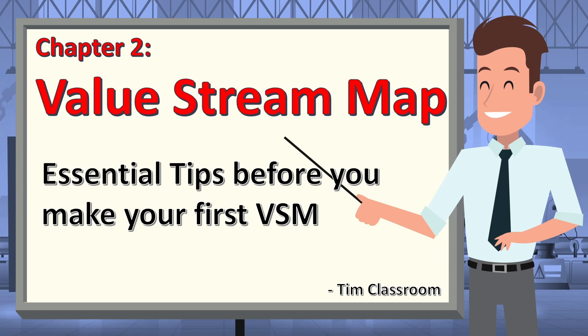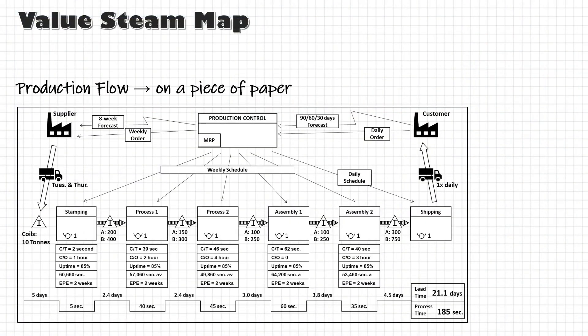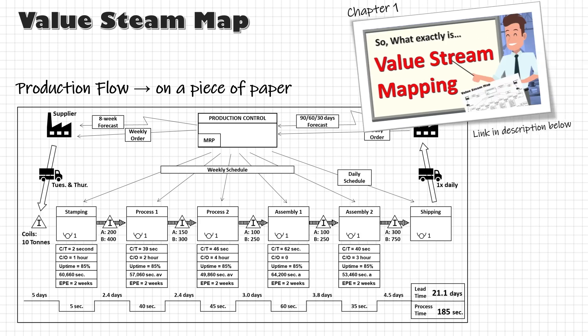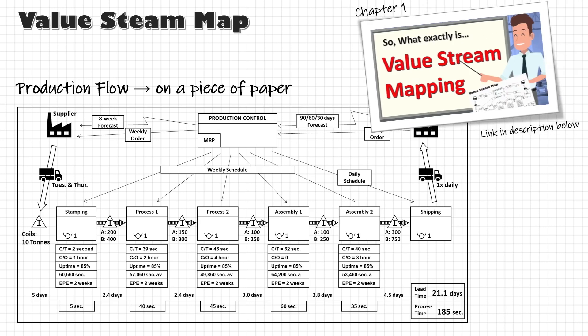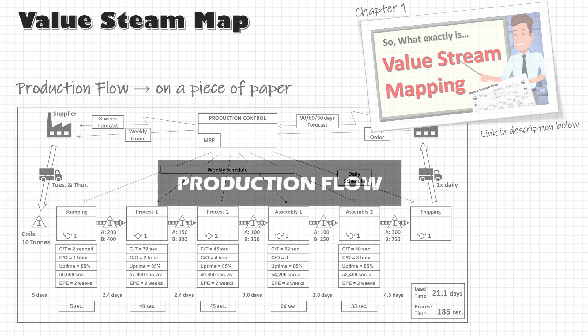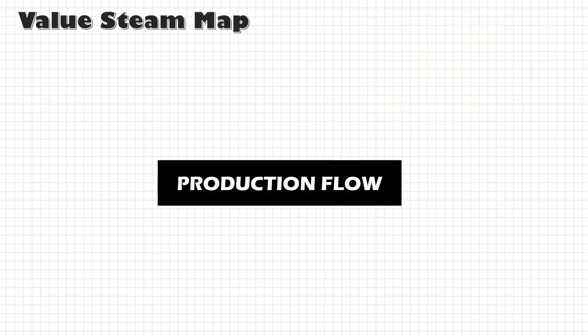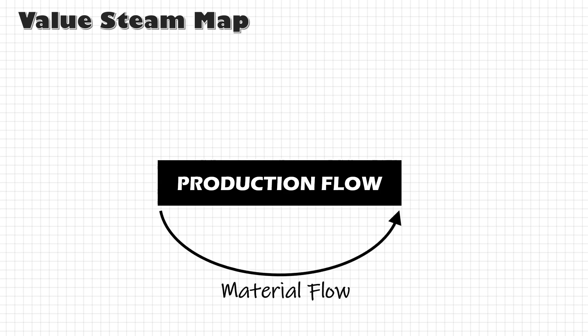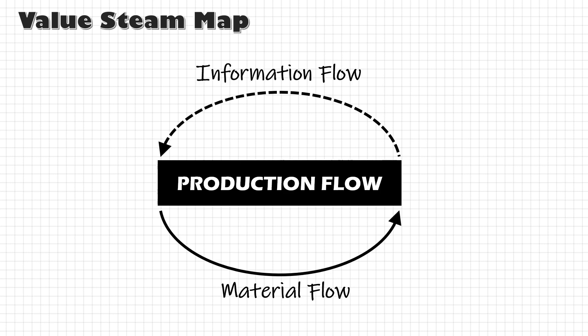Welcome back. In the last lesson we saw that by using VSM we can map the production flow on a piece of paper. Now by production flow what usually comes to mind is the flow of material, but there is one more flow — the flow of information.